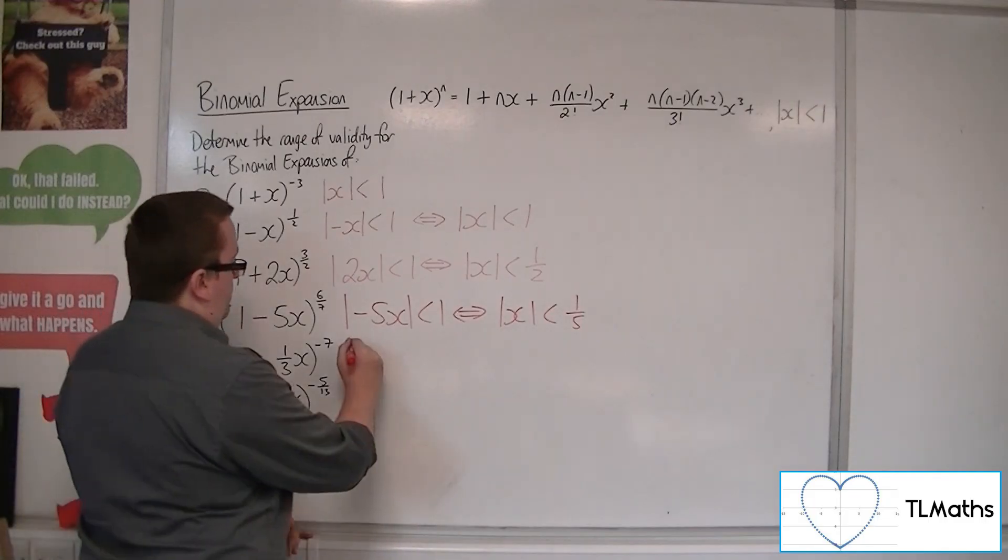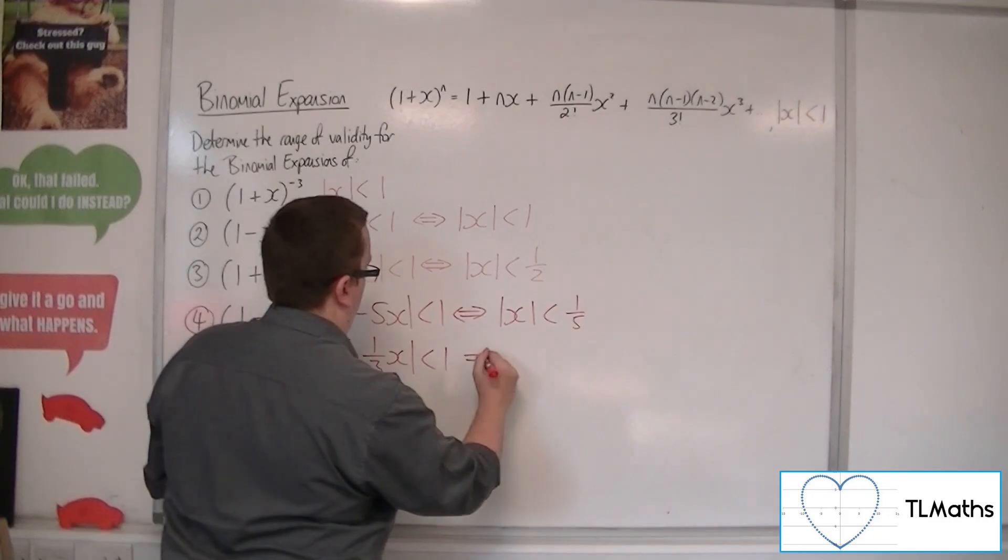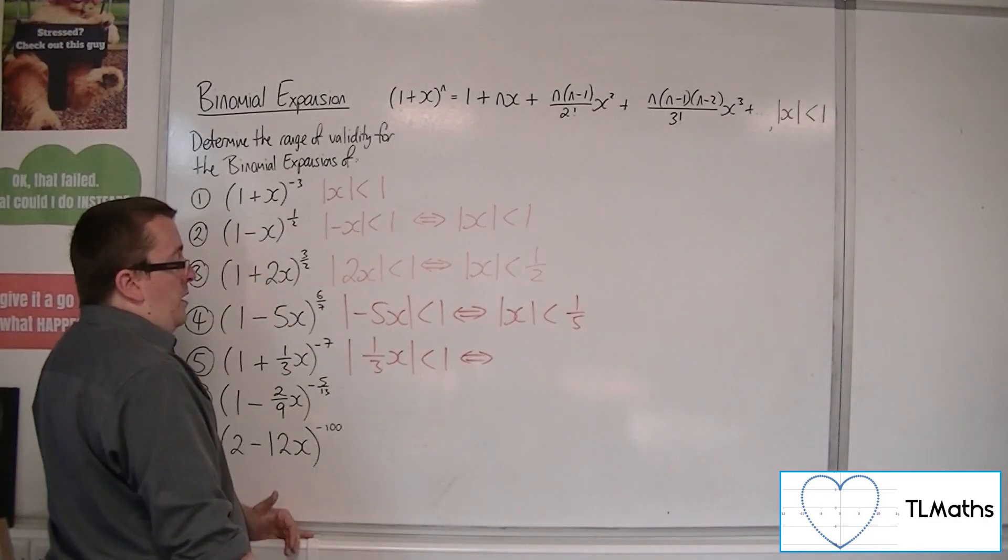(1 + x/3)^(-7). Replace the x with x/3. Then multiply both sides by 3.